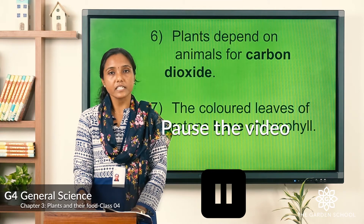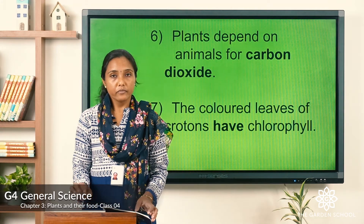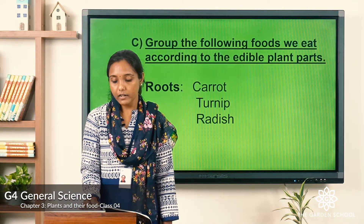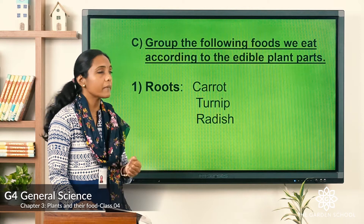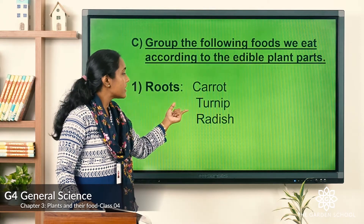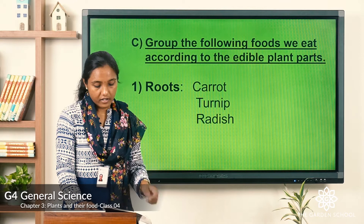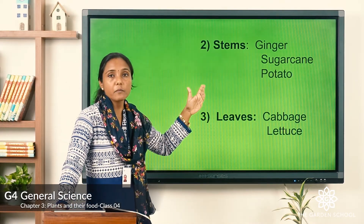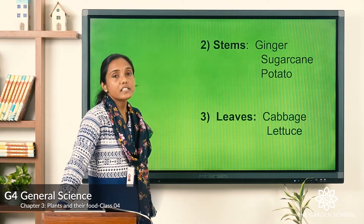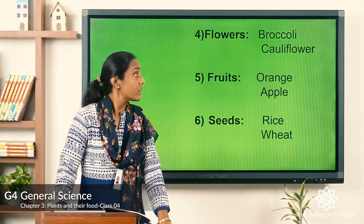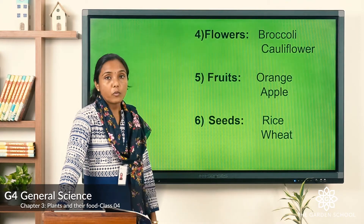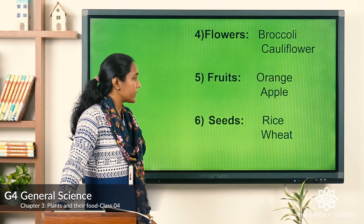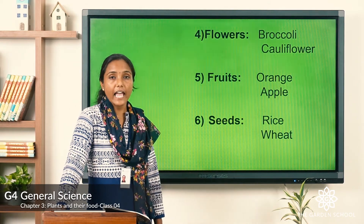Let's discuss the answers. Under roots: carrot, turnip, and radish. Under stems: ginger, sugarcane, and potato. Under leaves: cabbage and lettuce. Under flowers: broccoli and cauliflower. Under fruits: orange and apple. Under seeds: rice and wheat.